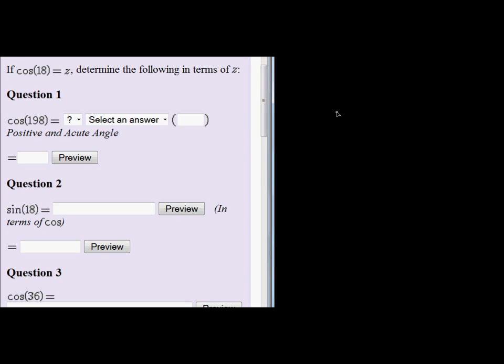If cos(18°) = z, determine the following in terms of z. cos(18°) = z. Remember that cos of any angle is adjacent over hypotenuse, so if it equals z, it's actually z over 1, which means my adjacent side is z and my hypotenuse is 1.